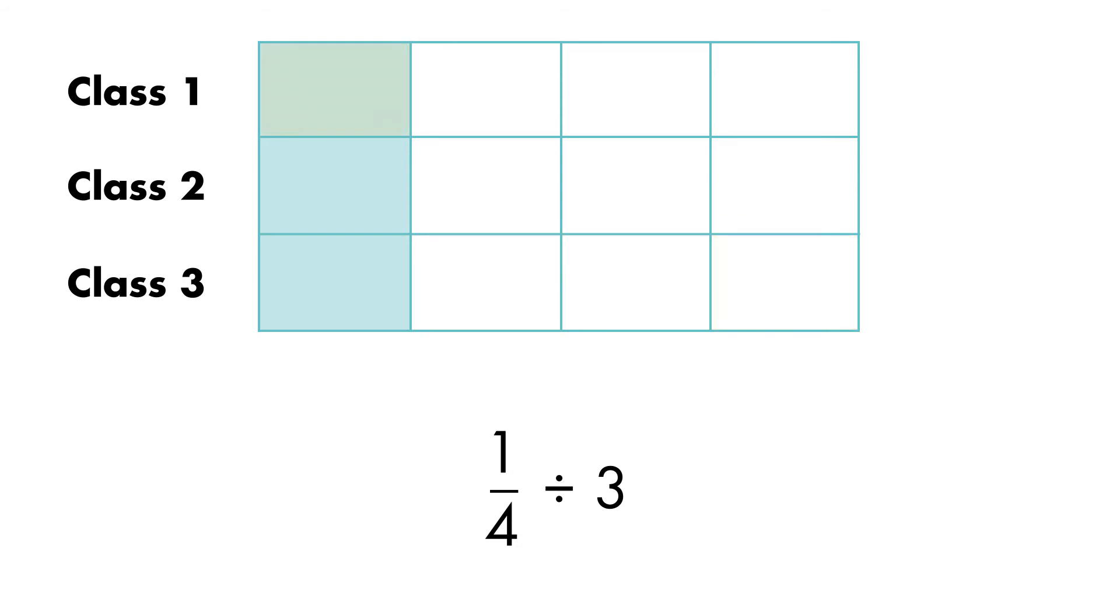Each fifth grade class gets one-twelfth of the auditorium. One-fourth divided into three equal parts is equal to one-twelfth.